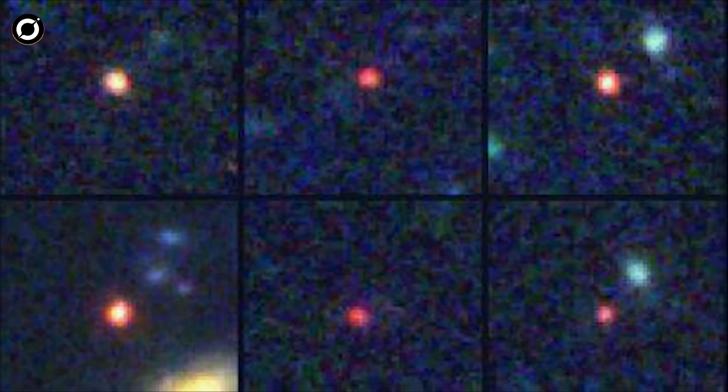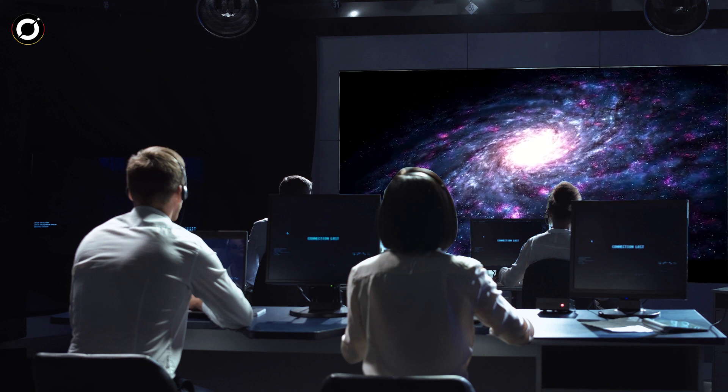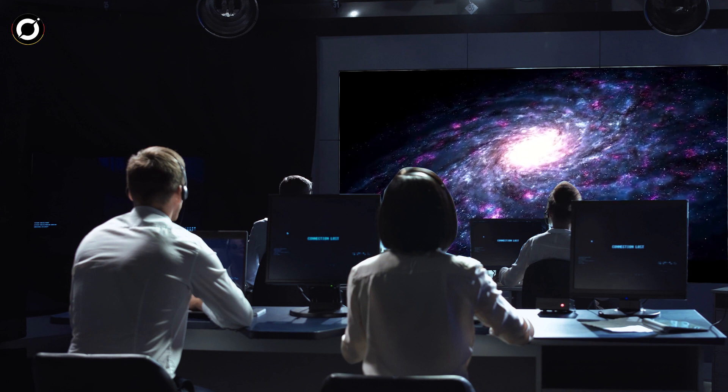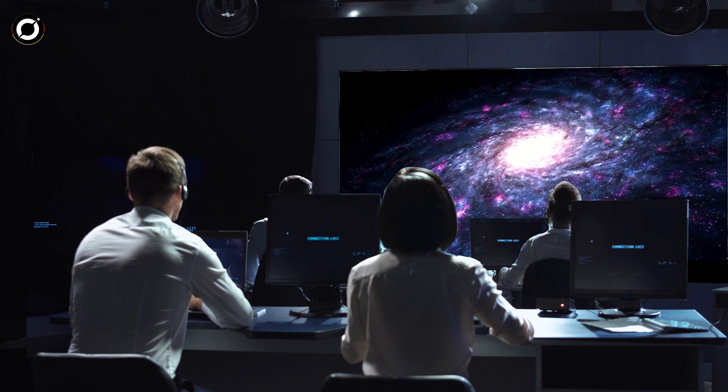Nachdem sie kürzlich sechs Megagalaxien entdeckt hatten, die sich bildeten, als unser Universum noch eine heiße, dichte Suppe war, brennen die Forscher darauf, Webbs Fähigkeiten weiter zu testen und zu verbessern. Jede Beobachtung liefert immer wieder Ergebnisse mit immer weiter entfernten und alten Galaxien, jede mit einer einzigartigen Eigenschaft.